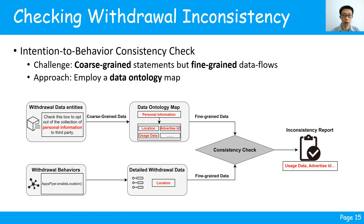ModeChecker checks inconsistencies between withdrawal intentions and behaviors by matching semantics and behaviors. A key challenge is how to match coarse-grained statements with fine-grained data flows. We solve this with a data ontology map, which enables detecting consistency between intentions and actual withdrawals. For example, ModeChecker maps 'personal data' to location, advertiser IDs, and usage data, then matches these with the actually withdrawn location data, thereby identifying inconsistencies of usage data and advertiser IDs.